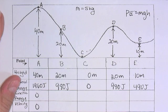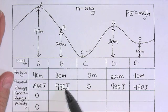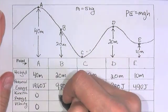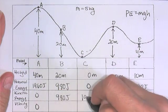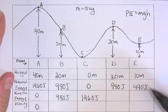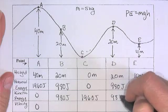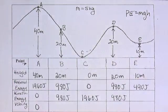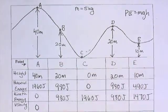To find the kinetic energies, I'm just going to subtract the potential energy. So, 1960 minus 980 is 980 joules. 1960 minus 0 is 1960 joules. 1960 minus 490, sorry, I'm doing it on my calculator, is 1470 joules.